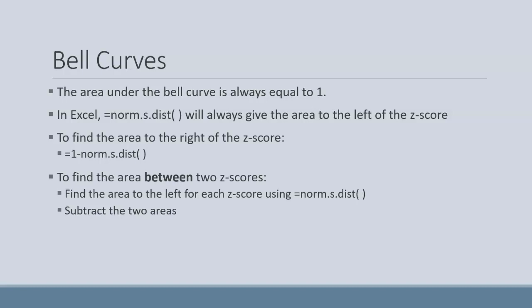we're going to just use =norm.s.dist like normal. So we find the area to the left for each of them. For the first z-score, we'll use =norm.s.dist. Then we'll do the same thing for the second z-score. It's going to return two different areas or two different probabilities. We then just subtract those two numbers that we get, and that will give us the area between two different z-scores.